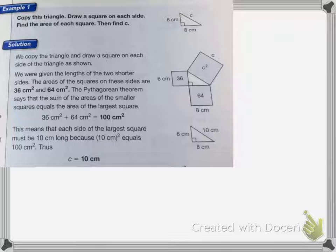So you would draw a square on each side that has the same length as the side of the triangle. And we were given the length of the two shorter sides.